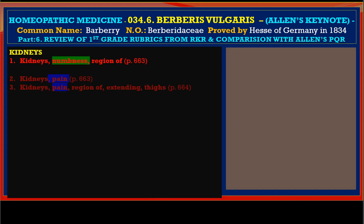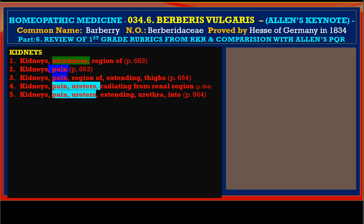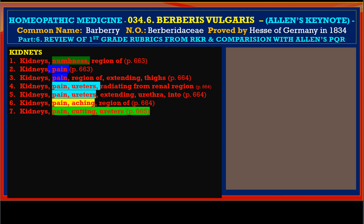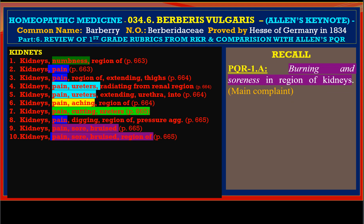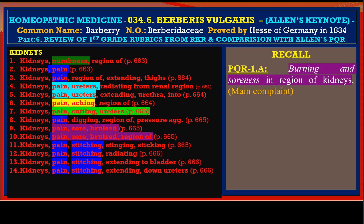Now we find in kidneys: numbness in the region of kidney, kidney pain in the region extending to thigh, pain in urethra radiating from renal region extending into urethra, and pain aching in the region of kidney. There is also pain cutting in the ureter, pain digging in the region, and pain sore bruised — represented in two rubrics: kidney sore bruised in region of kidney, and simply kidney pain sore bruised. This is also seen in Allen's keynote — burning and soreness in the region of kidney given in PQR1A.